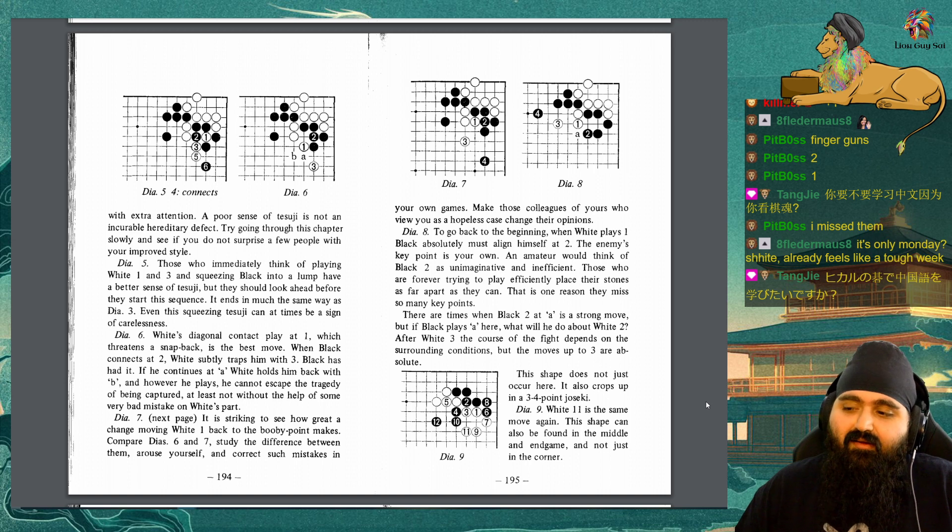Diagram 6: White's diagonal contact play at 1, which threatens a snapback, is the best move. When black connects at 2, white subtly traps him with 3. Black has had it. If he continues at A, white holds him back with B. And however he plays, he cannot escape the tragedy of being captured, at least not without the help of some very bad mistakes on white's part.